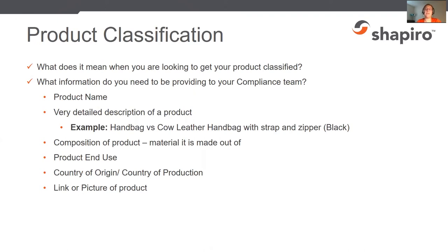That detail is really important because the harmonized tariff schedule — the HTS schedule — that we use with US Customs needs a lot of detail. Customs is very picky, especially for apparel, machinery parts, or things made of different materials. You can't just type in 'coloring book' or 'bed sheets' to search the HTS code — products are actually classified by their composition and their end use.